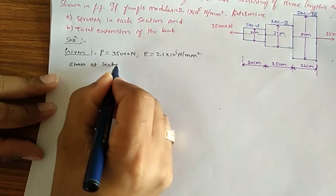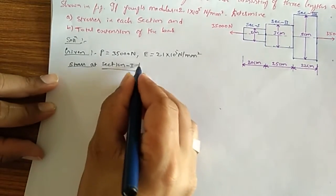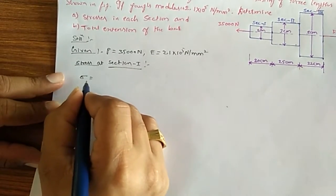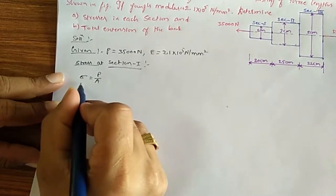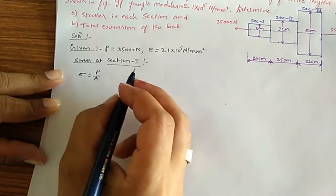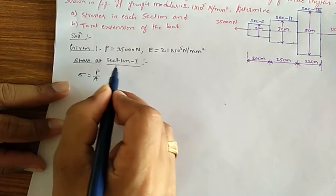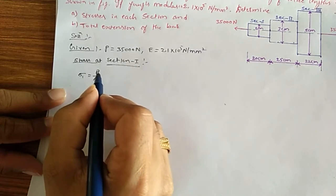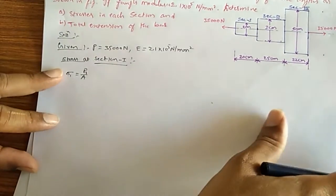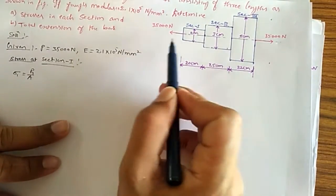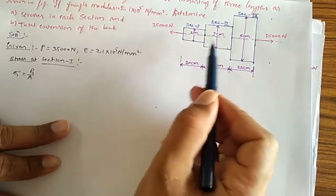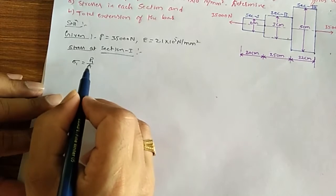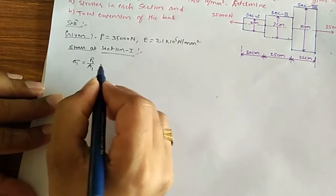For stresses in each section, let's start with section 1. The formula to find stress is σ = P/A, that is stress equals load divided by cross-sectional area. Since it is an axial load, if you take any cross section, the load applied is the same magnitude throughout, so P is constant but A₁ is specific to each section.